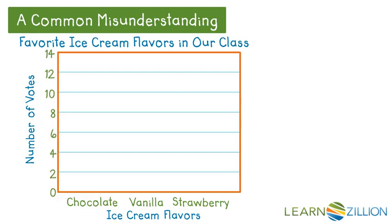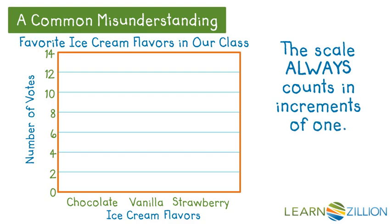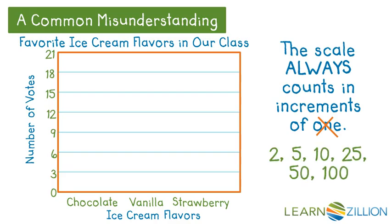Increments can be labeled 1, 2, 3, 4 or 0, 2, 4, 6, 8. The common misunderstanding is that the scale always has to count in increments of one — that is not the case. The scale can be in increments of whatever you decide: two, five, ten, twenty-five, fifty, one hundred.